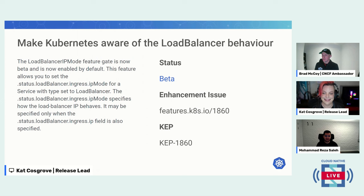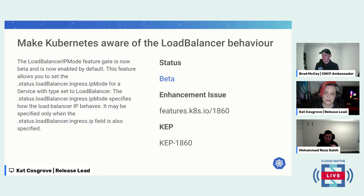Different kube-proxy implementations are currently binding the external IPs of load balancer services to each node. This enhancement proposes a new way to make these features configurable, giving cloud providers a way to disable that behavior of kube-proxy. It's also in beta.